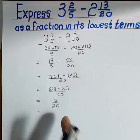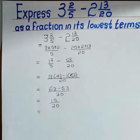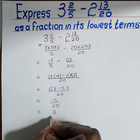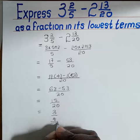We reduce 15 over 20 by dividing by 5 on both the numerator and denominator, so we remain with 3 over 4 as our final answer.